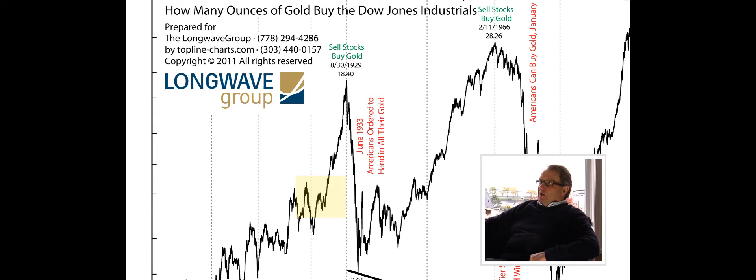But you can see that stocks are booming and they go to an 18.4 relationship, 18.4 ounces of gold to buy the Dow Jones Industrials right at the peak of the stock market at the end of August 1929.